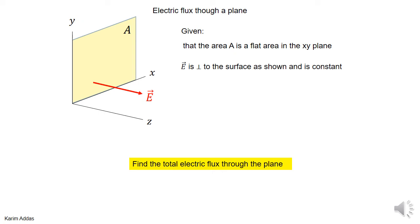We said before that the concept of electric flux is very abstract, so we can't really explain it in terms of something else that easily. There are analogous quantities — like current, for instance — that have the same mathematical form. But what we can do is learn how to calculate it, so let's start with one of the simplest problems.